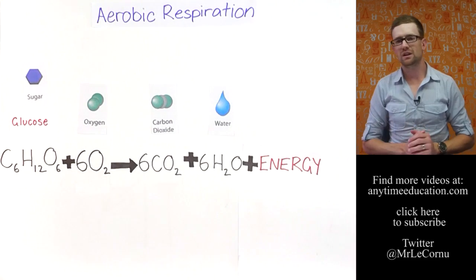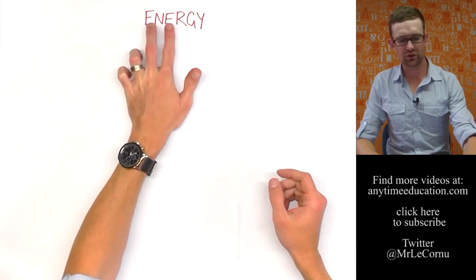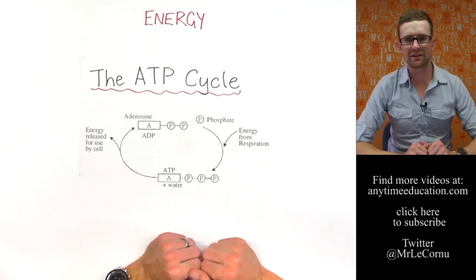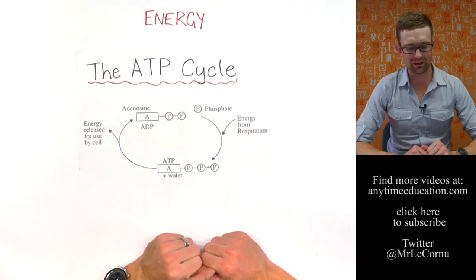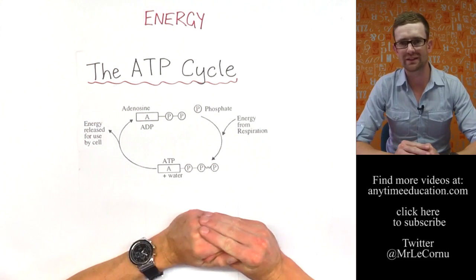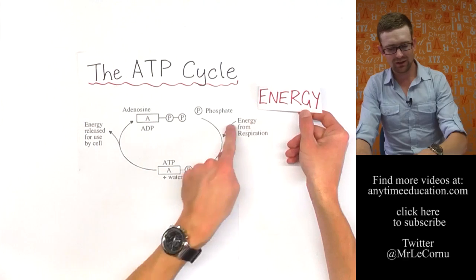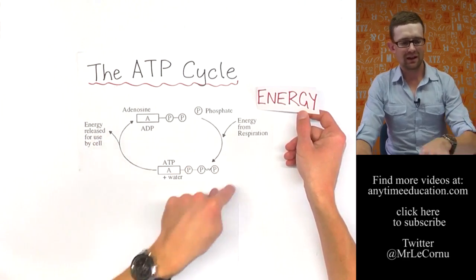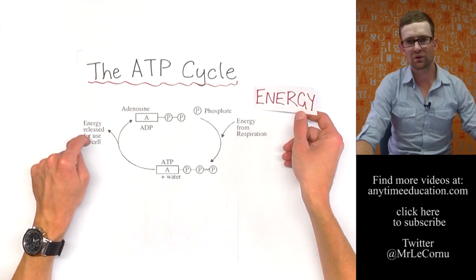The energy that's produced by aerobic respiration then fuels the ATP cycle. ATP is an energy storing molecule that is used by cells. If you want to find out more about the ATP cycle, check out the video called What is the ATP cycle? But put simply, the energy from respiration is used to add a phosphate back onto ADP and make ATP again. Then the energy from the ATP cycle is used by the cell for the cell's work.